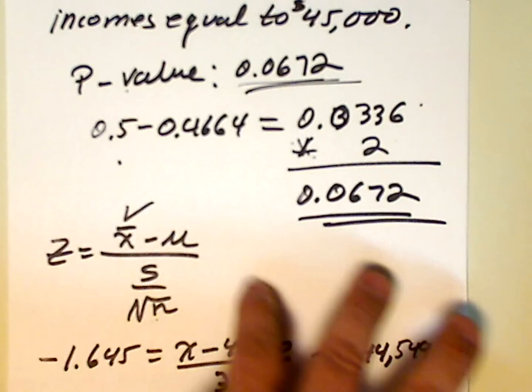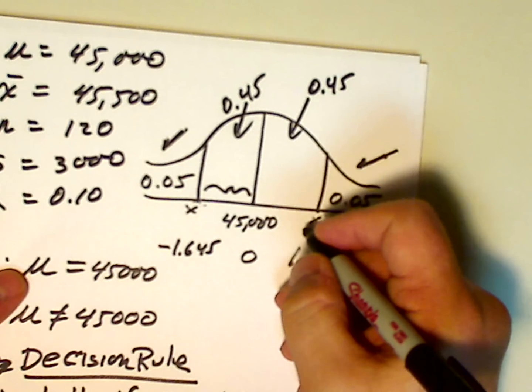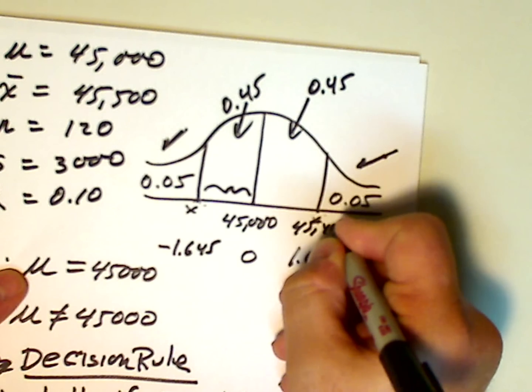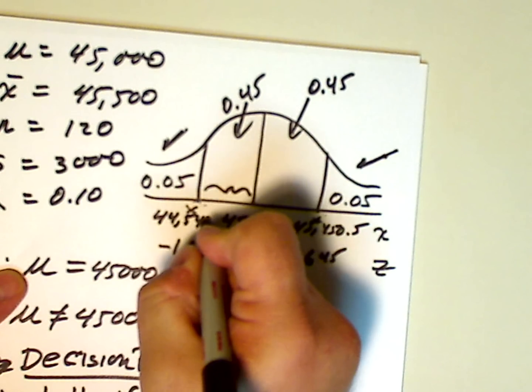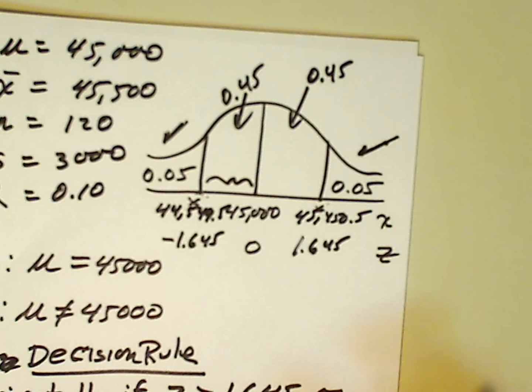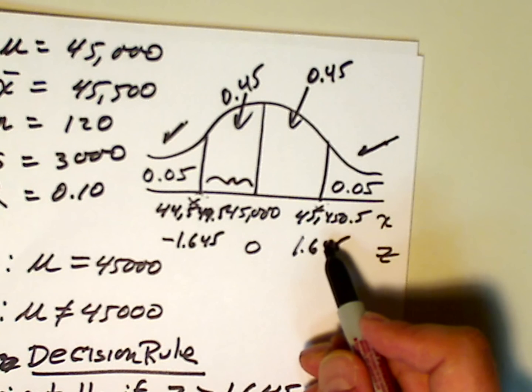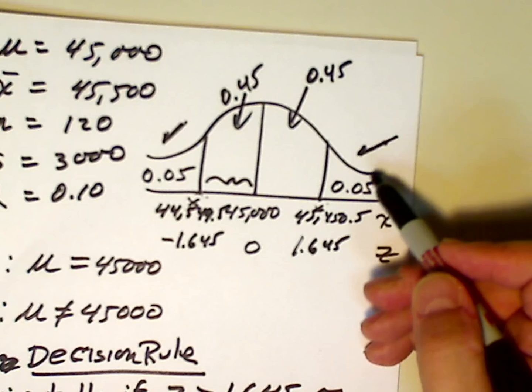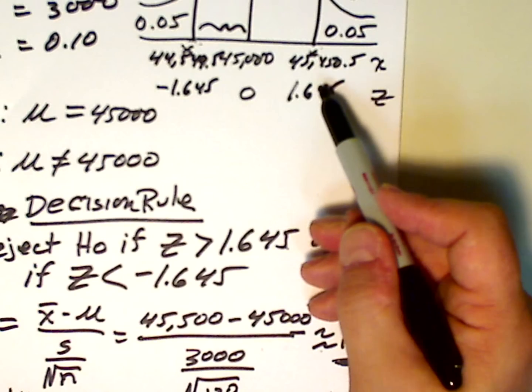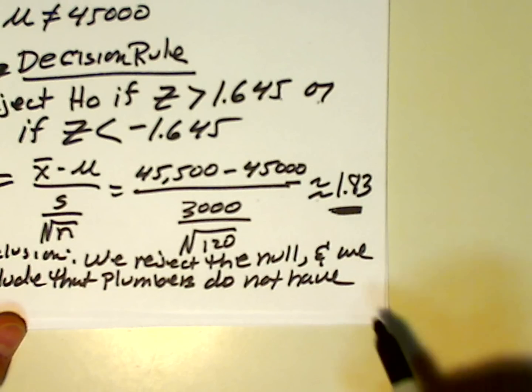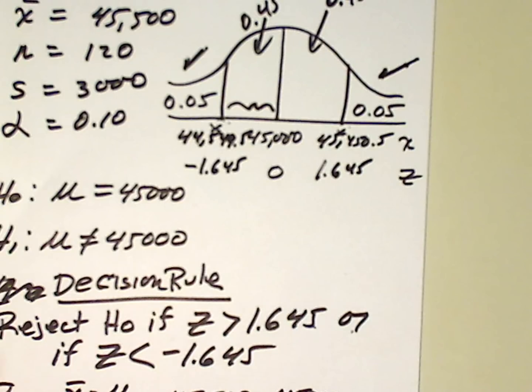And, if you work that out, I believe the numbers work out to be 44,549.5 and 45,450.5. So, these are the two values associated with the cutoff points. I'm going to round them off because it's basically 45,450.5 and 44,549.5. So, 44,550, 45,450, those are the two cutoff points. And, again, we were interested in 45,500. And, that fell, if you notice, 1.645 is the cutoff, 1.645, and 1.83 was the test statistic value. That's why it was so close, because the cutoff points are so close to the 45,500.